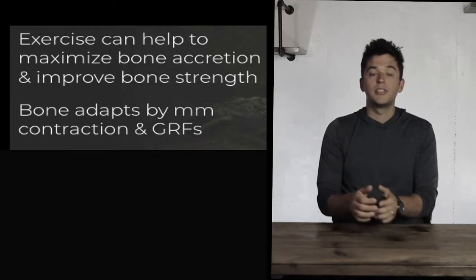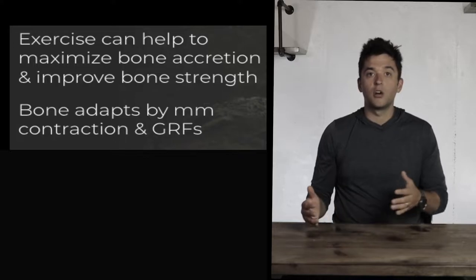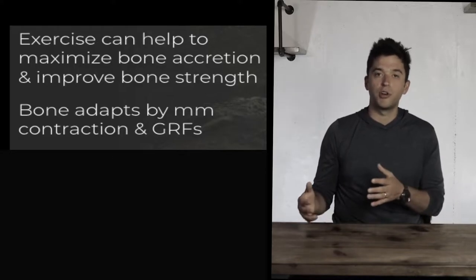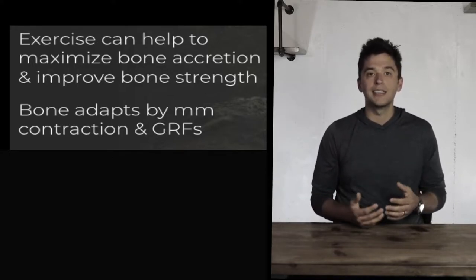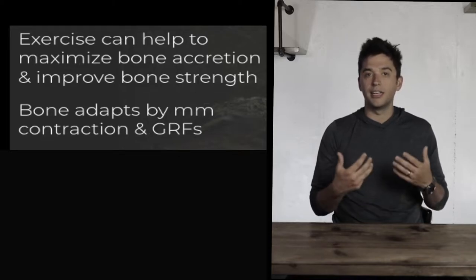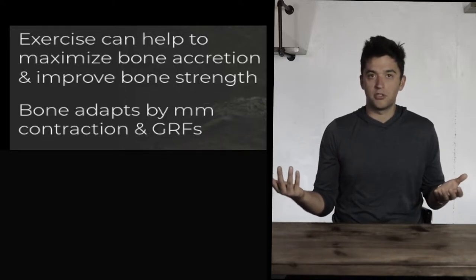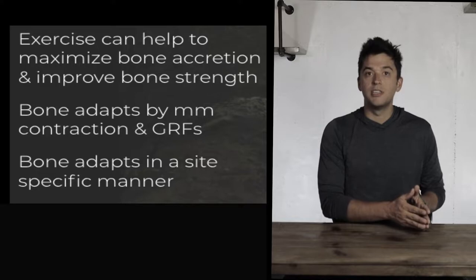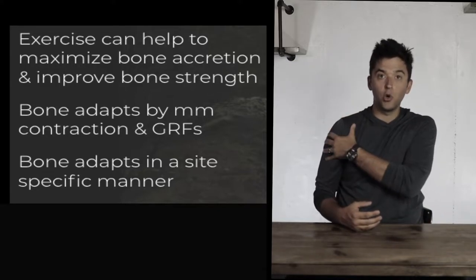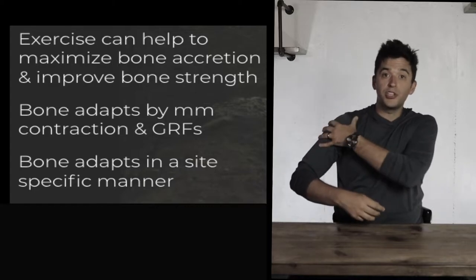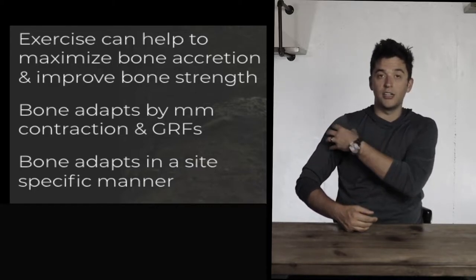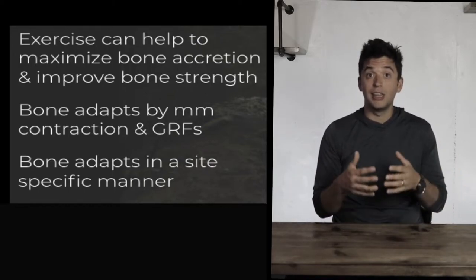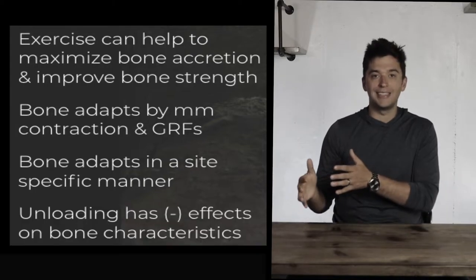The second type of load is ground reaction force or impact — when our foot hits the ground during jumping or running, those impacts cause bones to respond and get stronger. Third, we're always dealing with gravity, so just being on Earth helps bones get stronger. Importantly, bone adapts in a site-specific manner — loading the shoulder by throwing a baseball will strengthen those specific bones, not others. Unloading has negative effects on our bones.